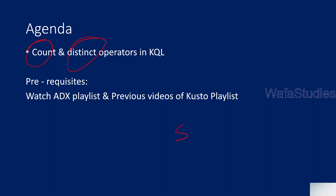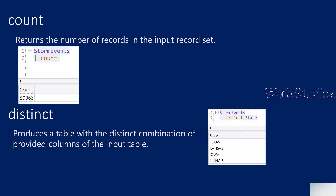It is basically similar to SQL. In SQL we also have count function and distinct operators. Count will get you the number of rows, and distinct will get the distinct values from a given column. It is similar functionality in Kusto as well, and these operators will return the same thing.